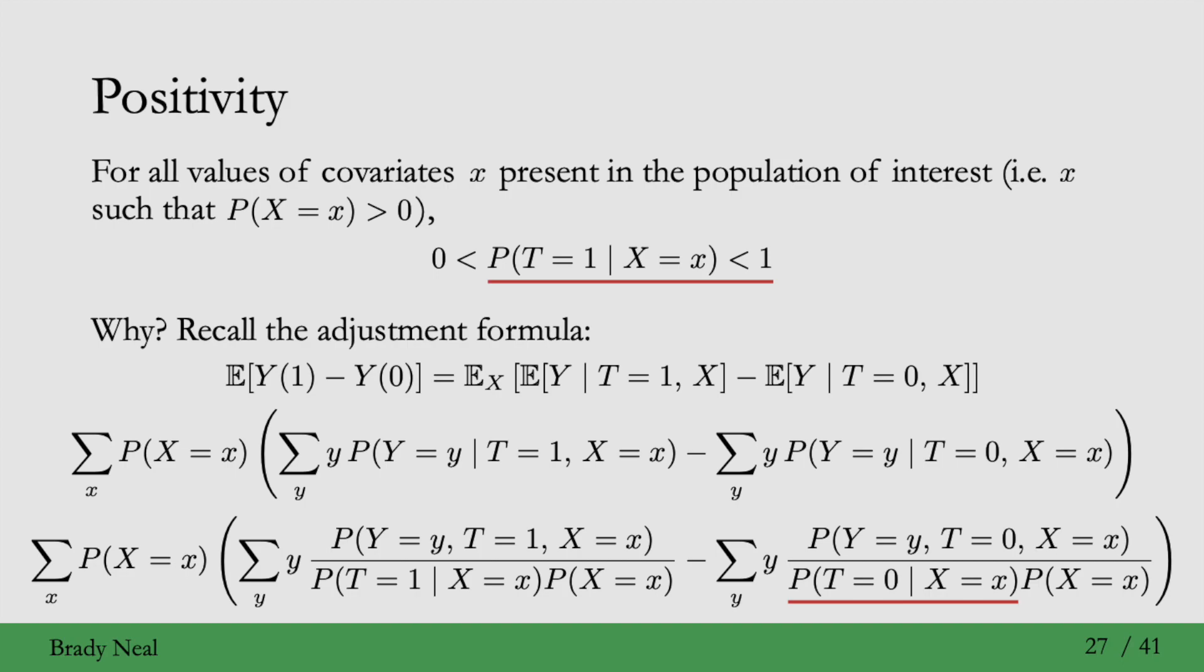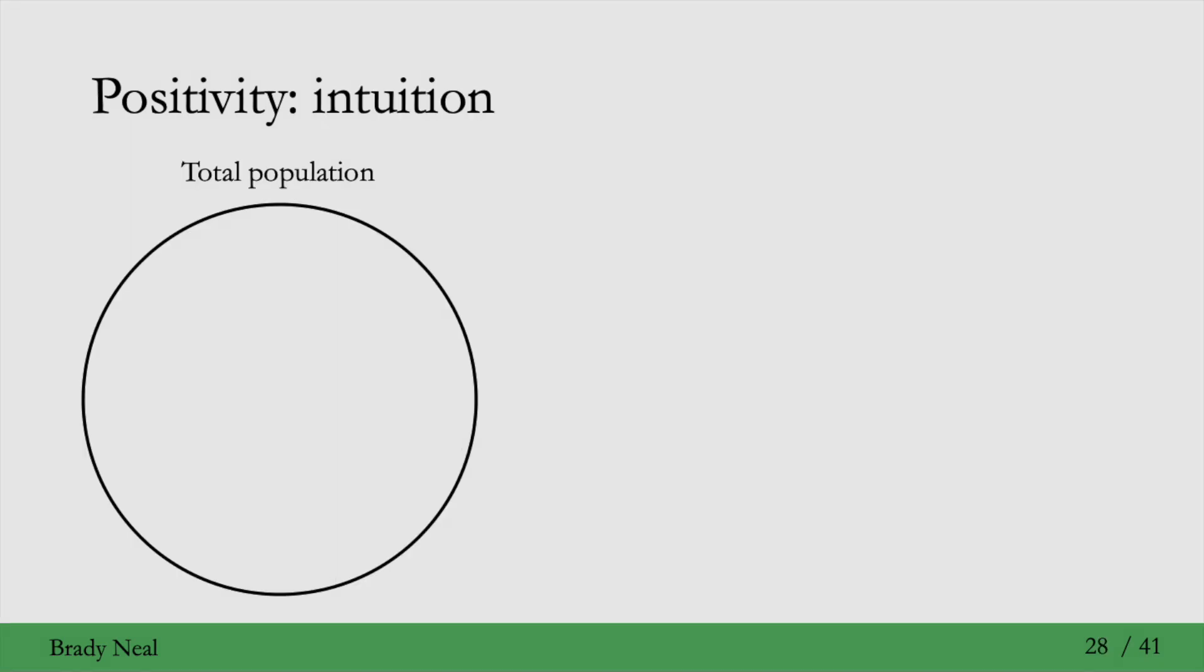This was a mathematical justification for the positivity assumption, but we can also give some intuition for this. So if this is the total population and we're interested in some subset of this population where X equals little x, then if you imagine that everyone in that subset were given the control, they were not treated, then how would we know what it would be like if this subset were given the treatment?